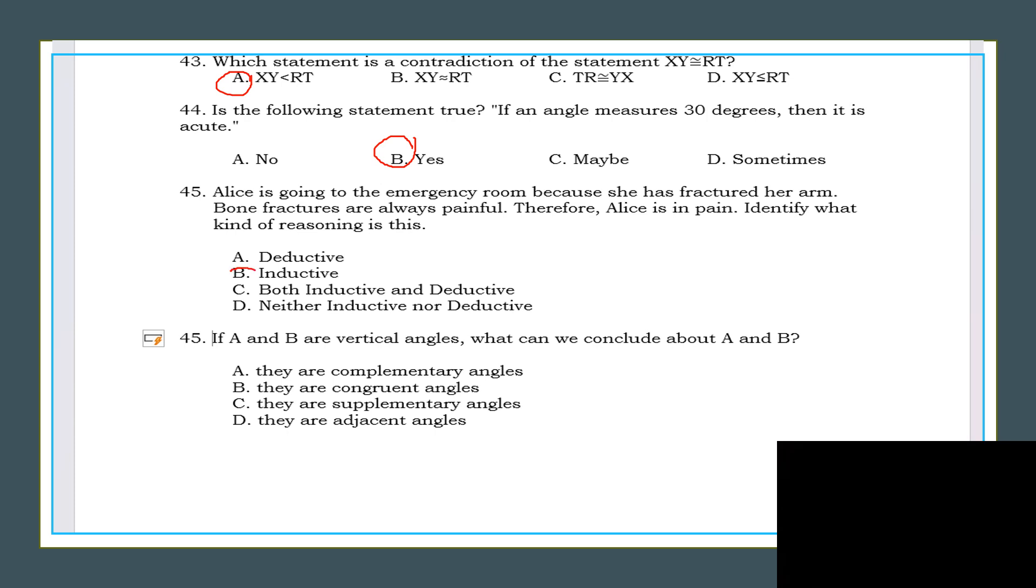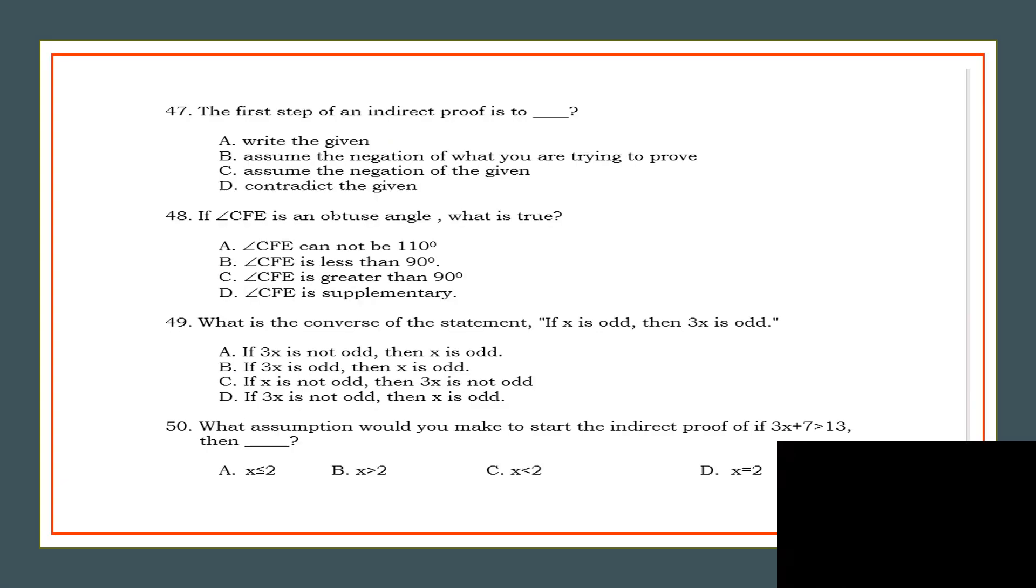If A and B are vertical angles, what can we conclude about A and B? The answer is they are congruent angles. Because they are vertical, they are congruent angles. What do you think is the answer? Assume the negation of what you are trying to prove. If angle CFE is obtuse, what is true? So the answer is C, if it's obtuse then it is greater than 90 degrees.